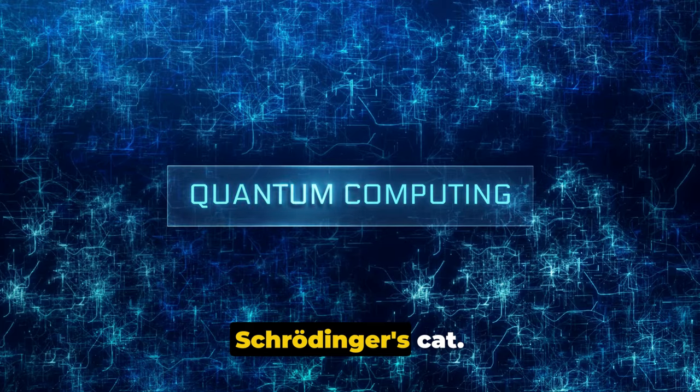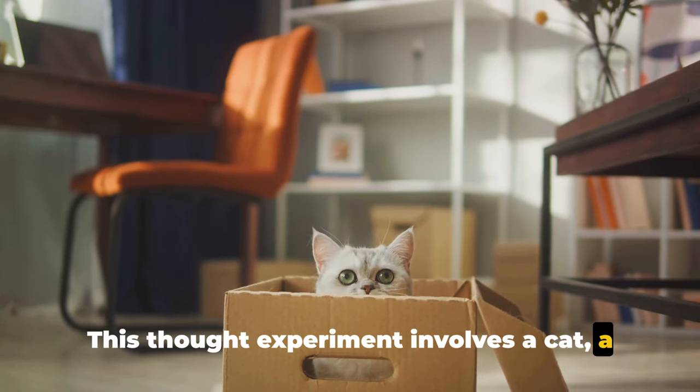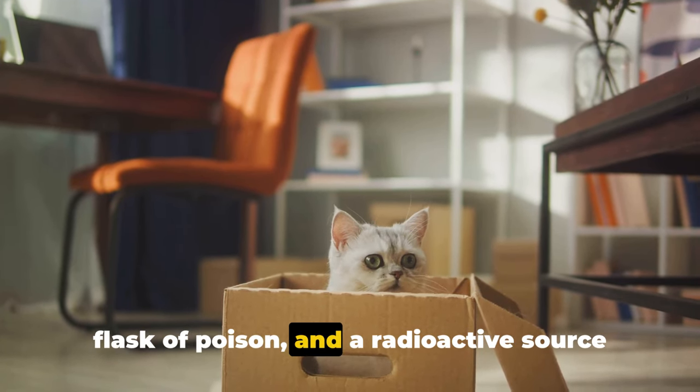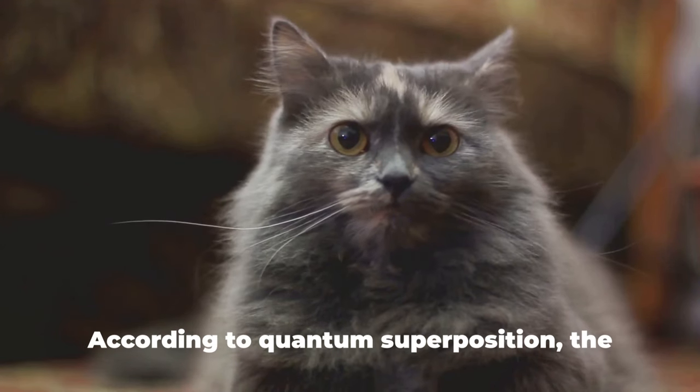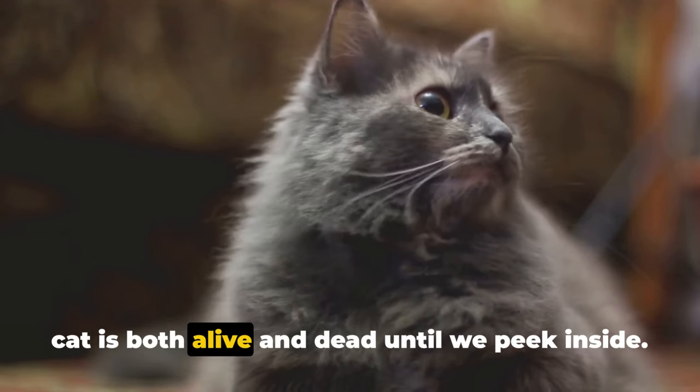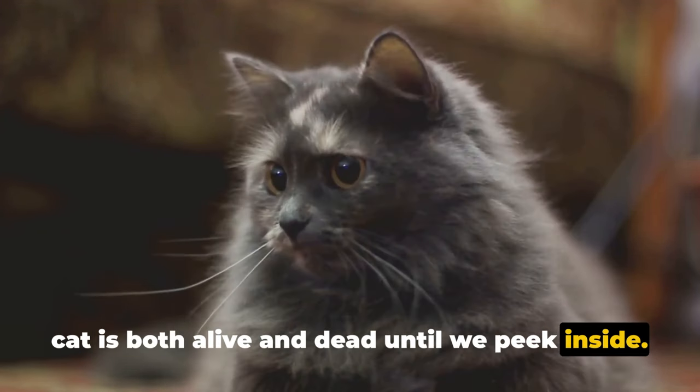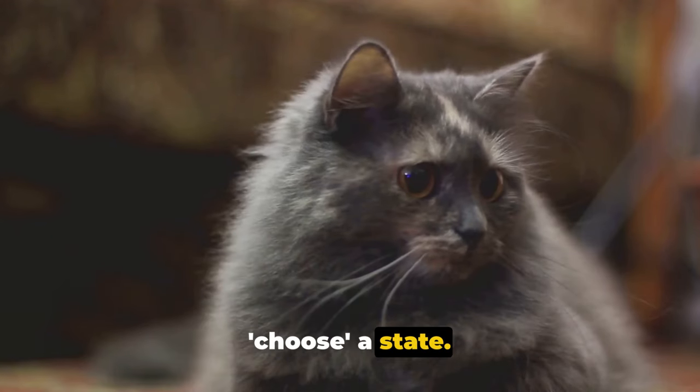Now let's bring in Schrödinger's cat. This thought experiment involves a cat, a flask of poison, and a radioactive source enclosed in a box. According to quantum superposition, the cat is both alive and dead until we peek inside. Only when we observe does the cat choose a state.